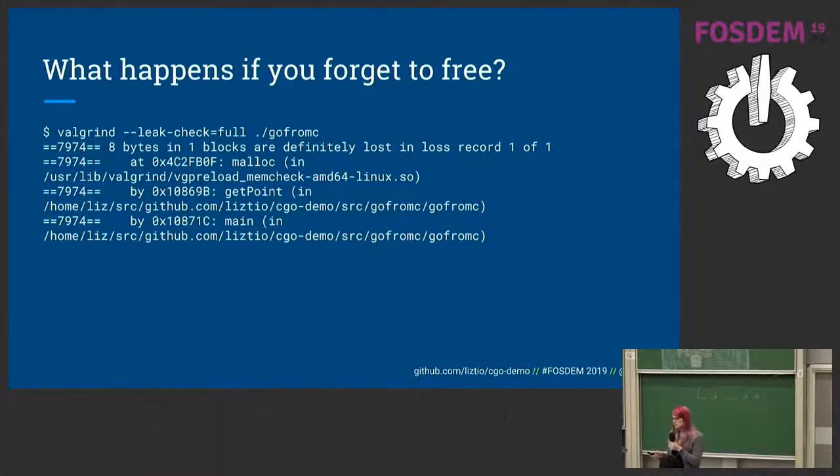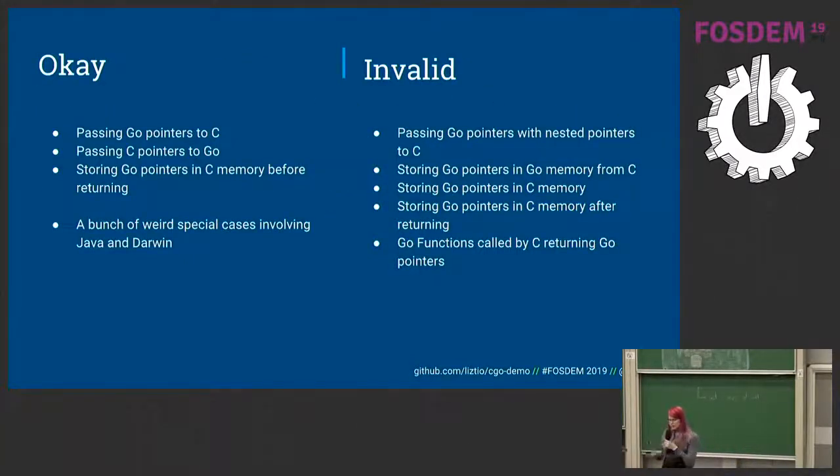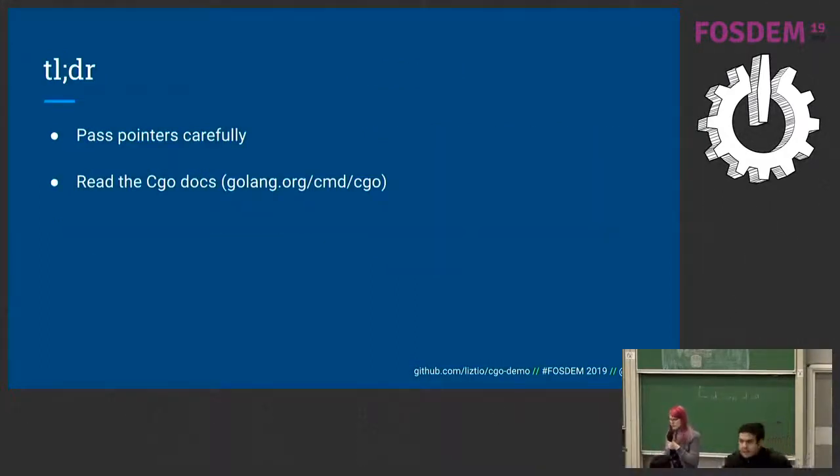Very different approaches to pointers. Very different approaches to memory management. What happens when you need to pass things between those two? Some things are okay. If you pass a Go pointer to C and only use it while you are in the C code, that is fine. Same if you pass a C pointer to Go. If you only use it briefly, that's fine. If you store a Go pointer in C memory, you can do that, but only until you return, and there's a bunch of weird special cases in the documents for Java and Darwin, and invalid is basically everything else, just be careful and read the CGo documentation very carefully. I read it 10 or 20 times before I gave up, summarized it as best I can, and issued this stern warning to all of you.